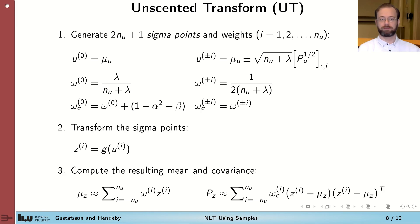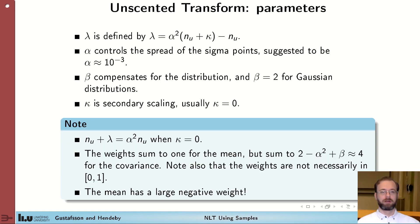Once we have these sigma points, they are transformed using the function g. And afterwards, the mean mu_z is computed as the weighted average of the sigma points. And P_z, the covariance, is computed as the weighted covariance of the sigma points. A number of parameters are necessary to construct sigma points, as indicated on the previous slide.